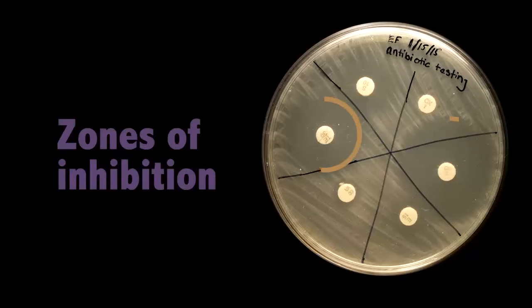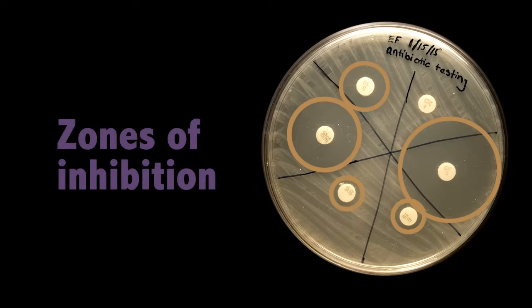After the bacteria have grown, you can see clearings around the antibiotic discs. We call these the zones of inhibition. The bacteria are only susceptible to some kinds of antibiotics. The purpose of the Kirby-Bauer assay is to determine how susceptible the bacteria is to each type of antibiotic. Can you think of a way to measure the susceptibility?